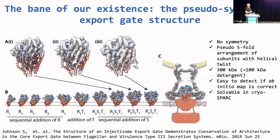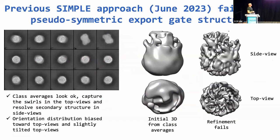We have put a lot of effort into trying to reconstruct this little molecule, the export gate — a sub-symmetric little bastard. It has no symmetry; it has a sub-fold arrangement of subunits with a sort of helical twist. It's 300 kilodalton, of which 100 kilodalton is disordered detergent. It's very easy to detect if the ab initio map is correct, and it's solvable in CryoSPARC. Unfortunately, SIMPLE doesn't do a very good job with it — it fails desperately, even though the class averages look okay. The orientation distribution is slightly biased towards top views, but the 3D that we get from the class averages is useless — just the aspect ratio of the molecule — and any refinement attempts in SIMPLE at least fail.